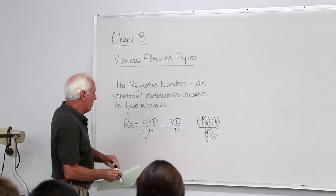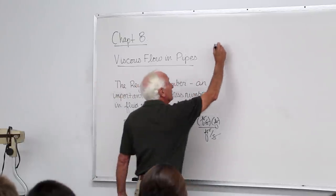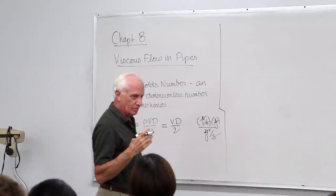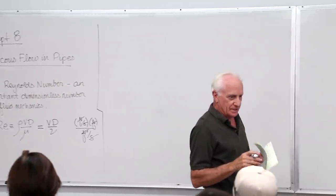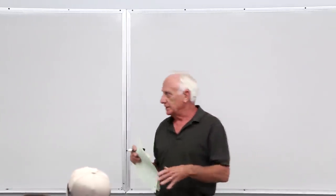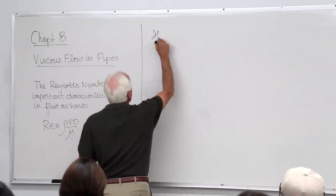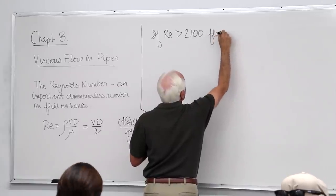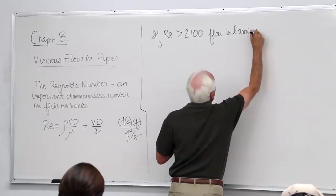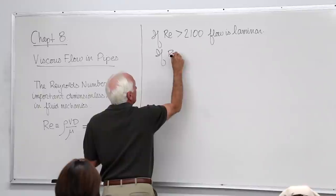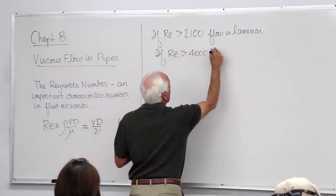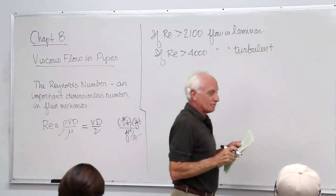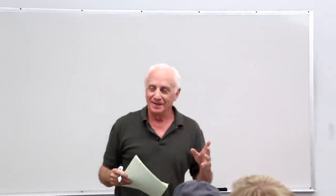The Reynolds number is important for one major reason in fluid mechanics: it tells us whether the flow is laminar or turbulent. There can be two types of flow in a pipe. If the Reynolds number is less than 2,100, flow is laminar. If the Reynolds number is greater than 4,000, the flow is turbulent.